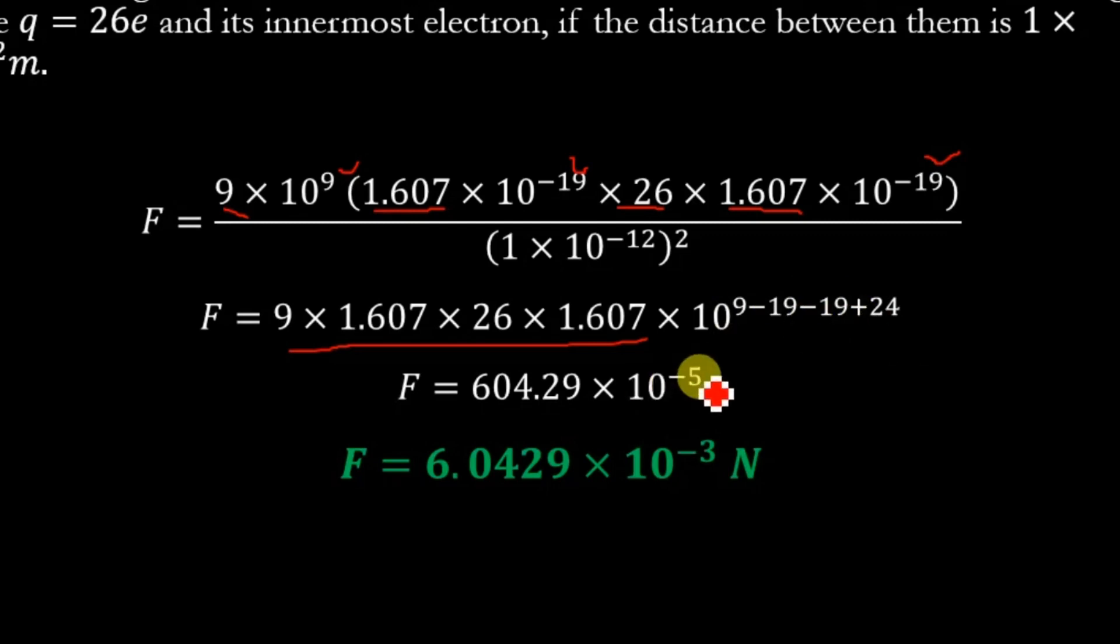So we have 10^(9-19-19+24) = 10^-5. Multiplying these terms we get F = 604.29 × 10^-5. Now shifting this decimal point two places to the left.